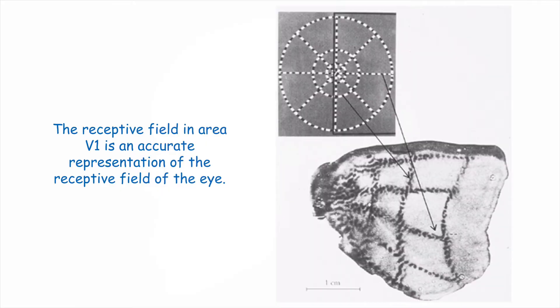The receptive field in area V1 is an accurate representation of the receptive field of the eye. Research has shown this clearly. Here you see a visual image at the top that was clearly recorded and encoded in area V1.